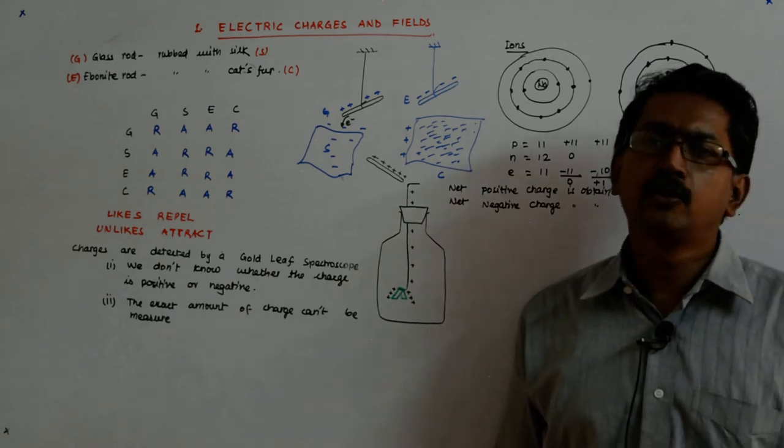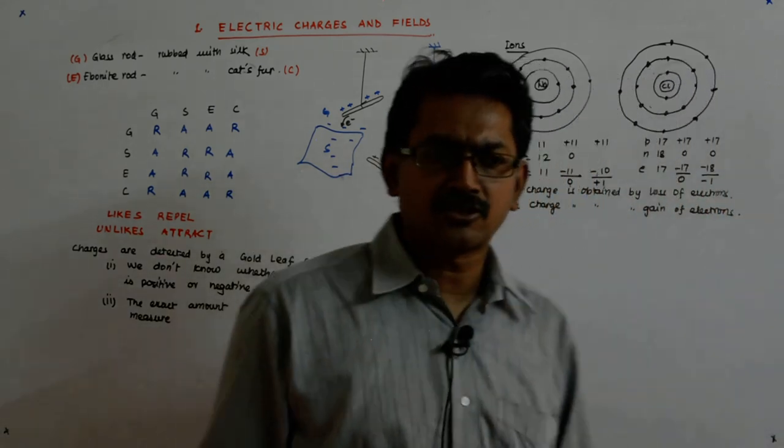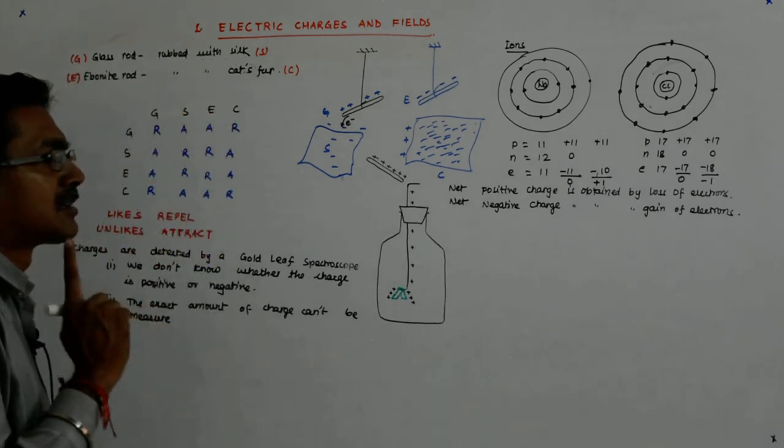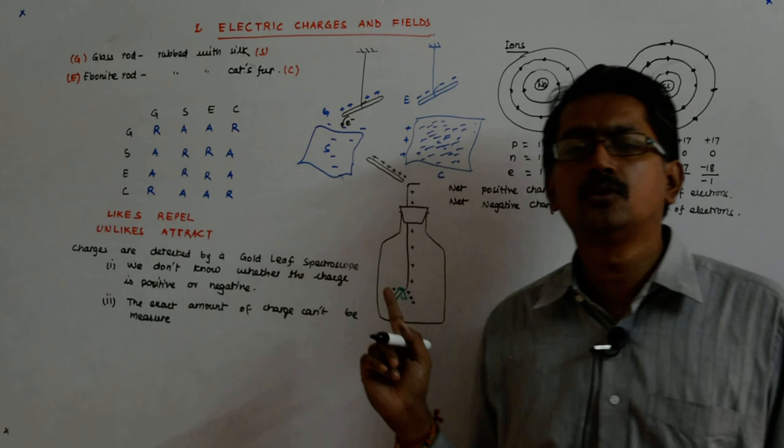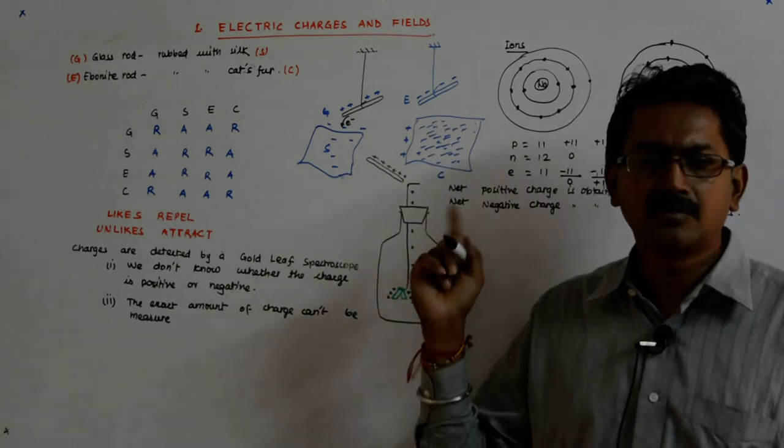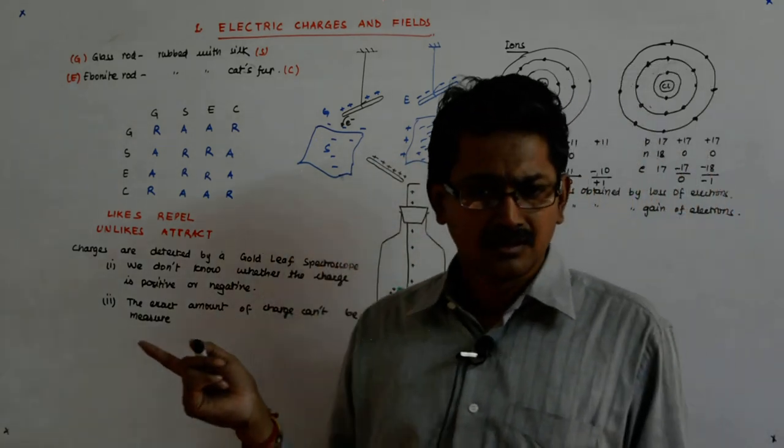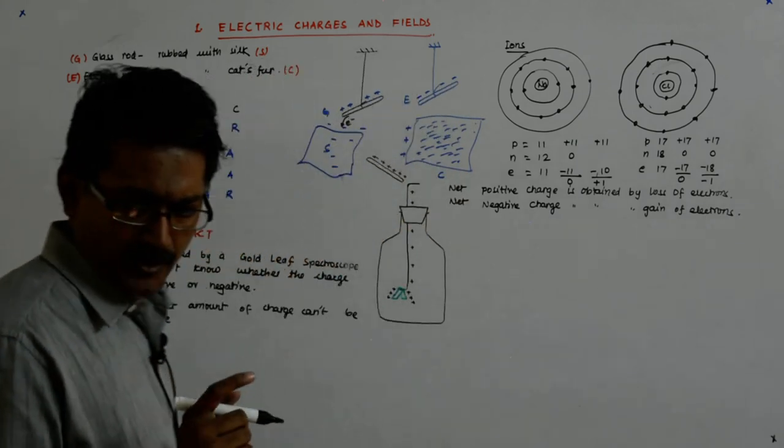From where did you get the energy for the transfer of electrons? From that vigorous rubbing motion, that work that you did, that was enough to pluck the electrons from one material and move it to the other.